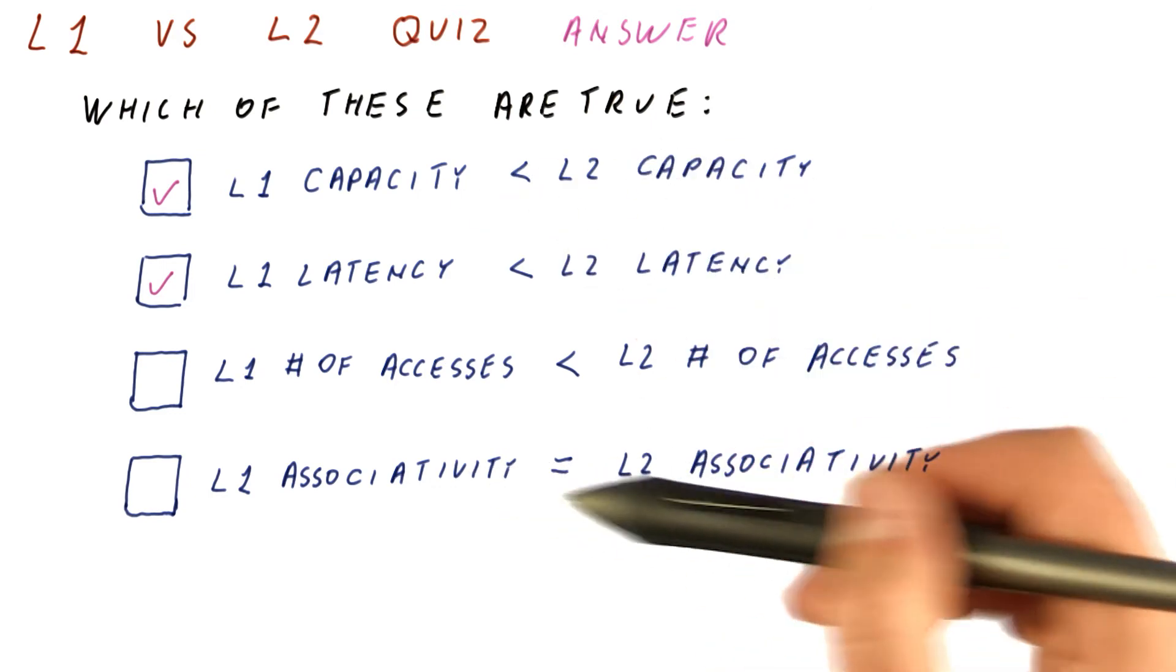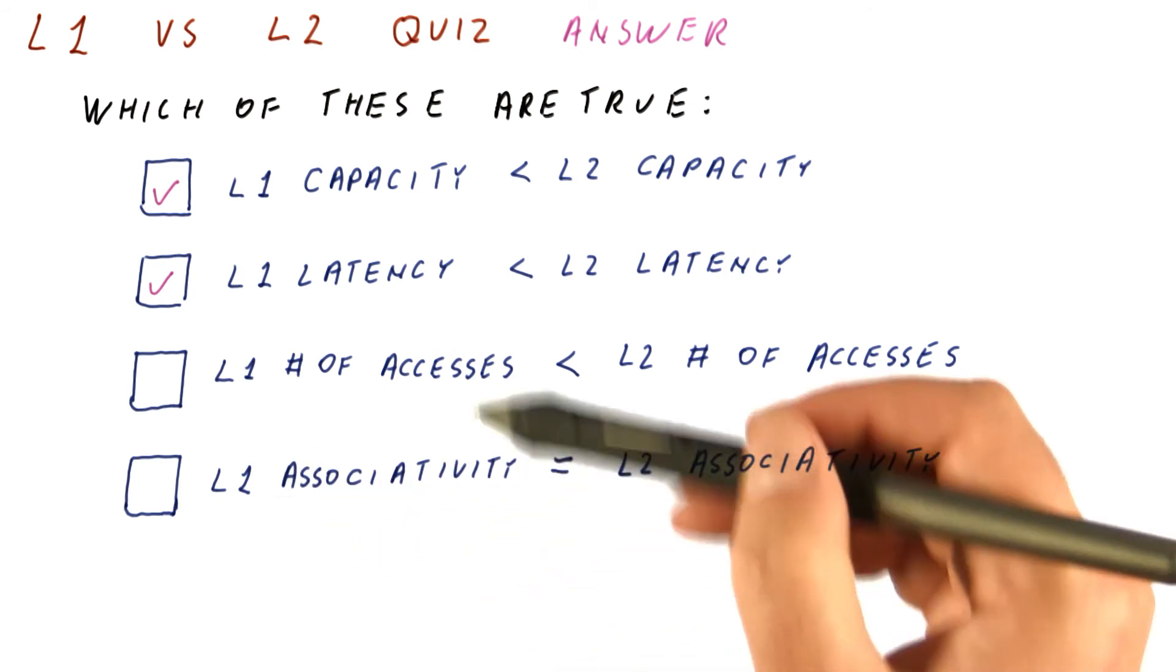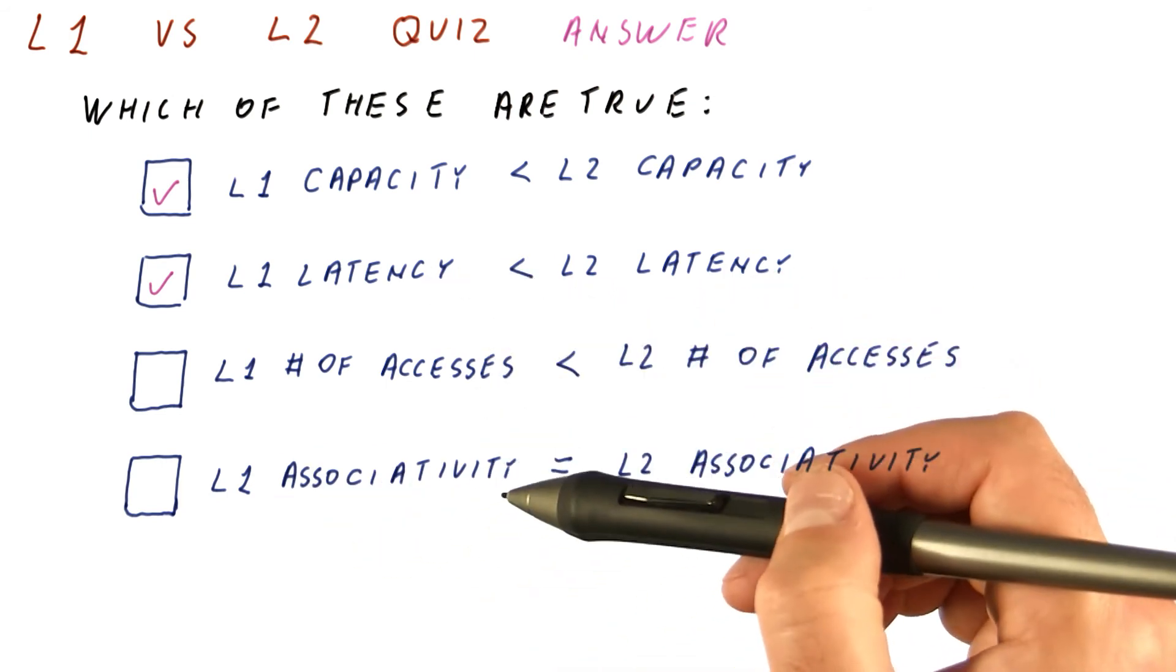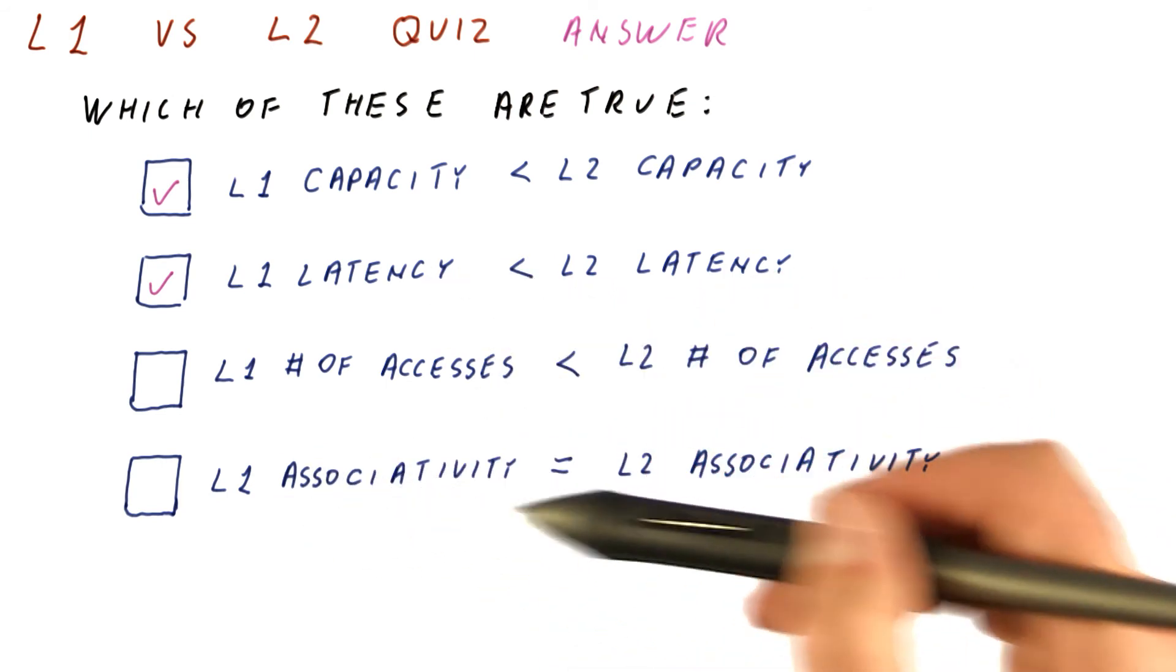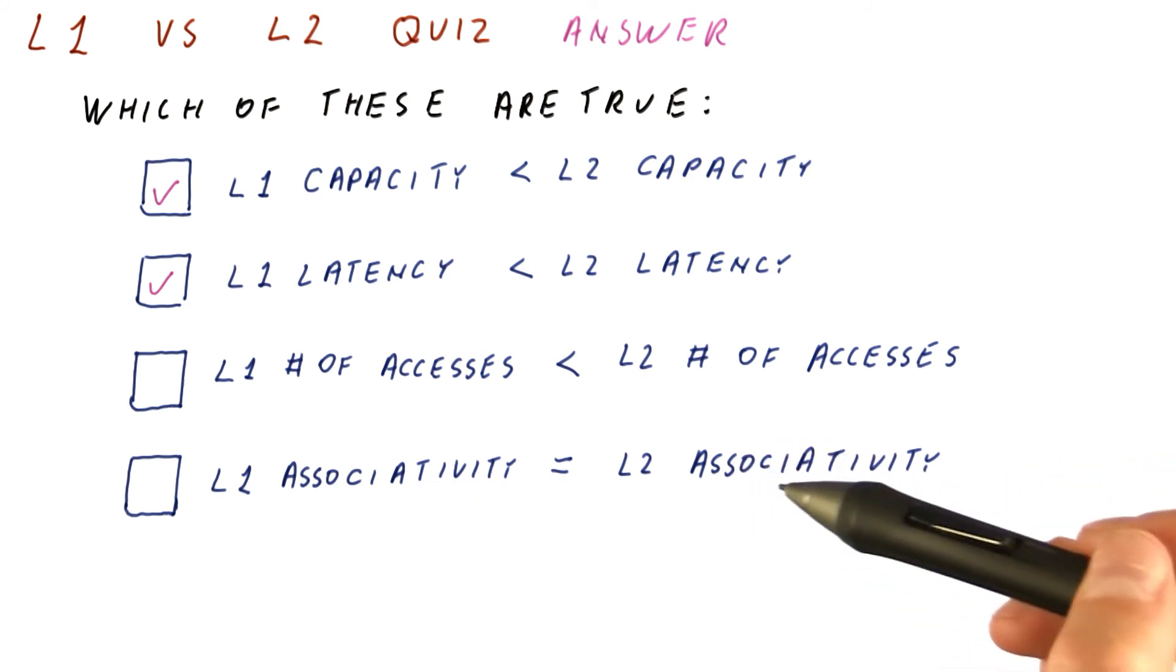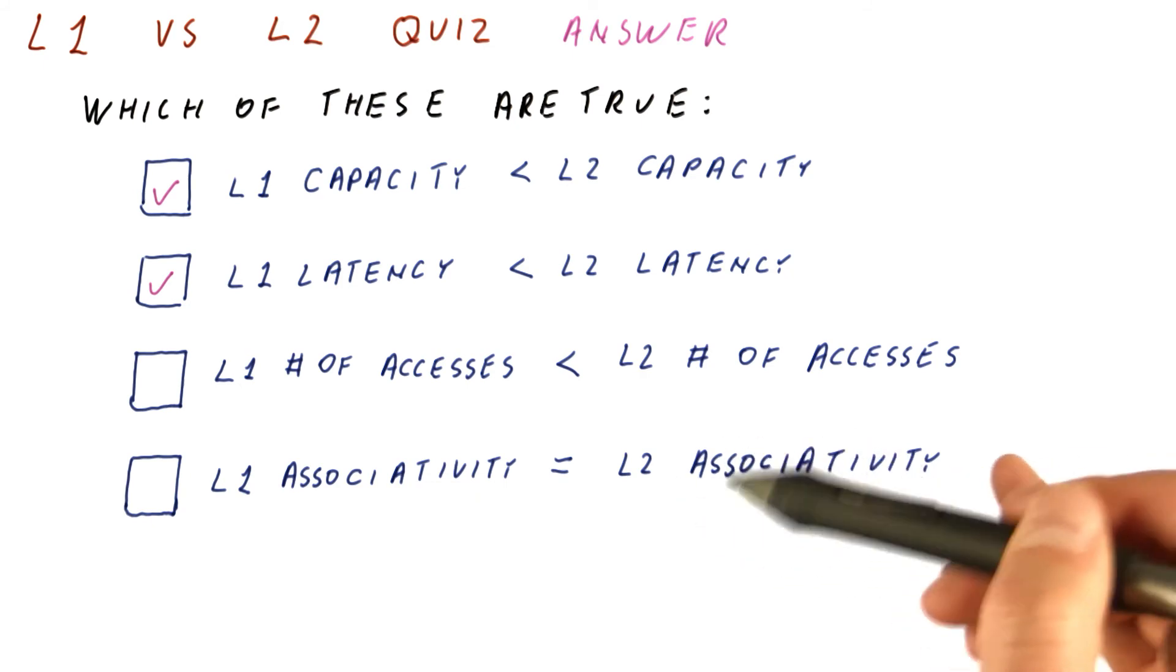Similarly, for associativity, the L1 cache, because it needs to be fast, can have a lower associativity, whereas the L2 cache can be slower, so we can maybe afford a higher associativity.